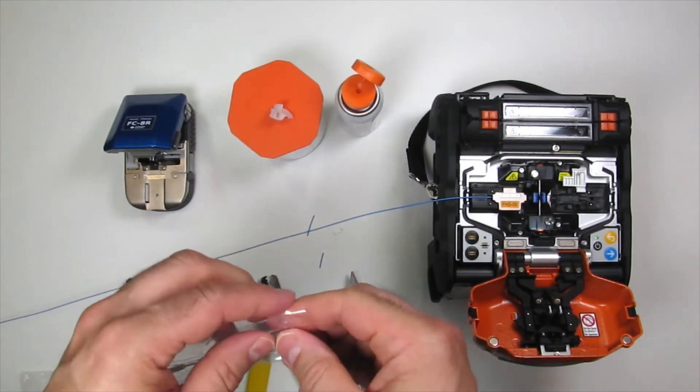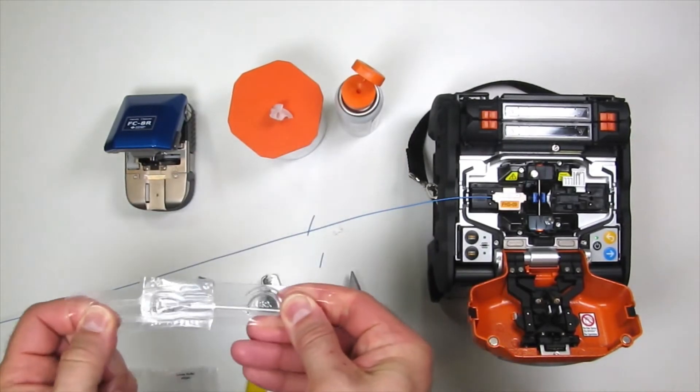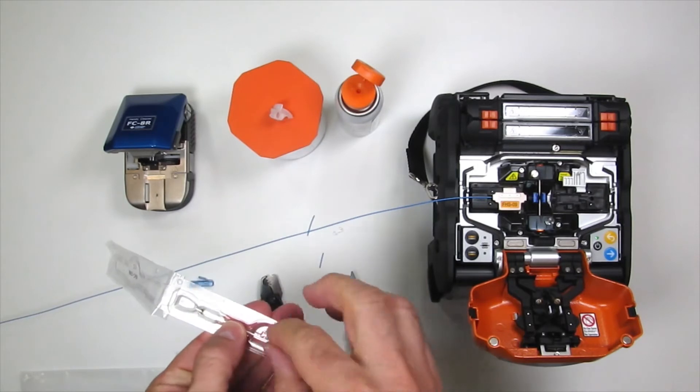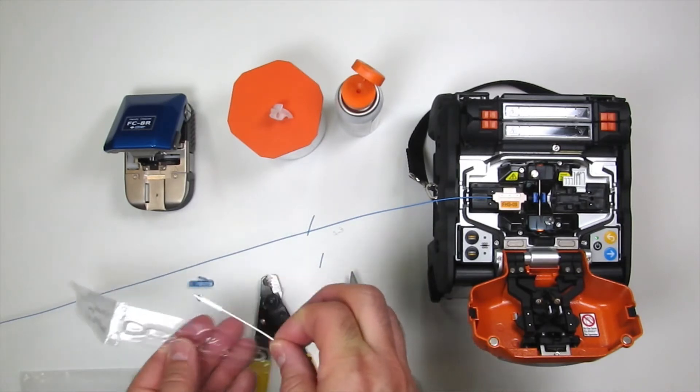Using the ferrule holder included with the package of connectors, open the clamp and lay the fiber in the groove with the ferrule in the pocket under the clamp. Close the clamp.